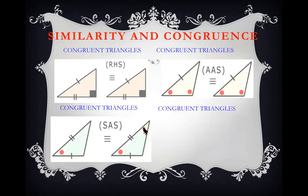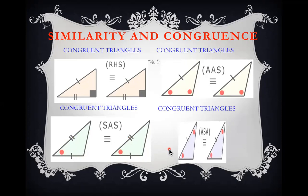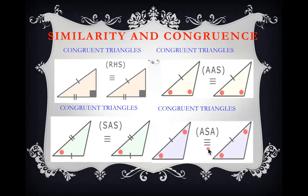Another congruent type is when we have one angle in the middle of two sides, with both sides and the included angle equal — this is Side, Angle, Side (SAS). There is also the case where we have two angles with one side between them, giving us Angle, Side, Angle (ASA).